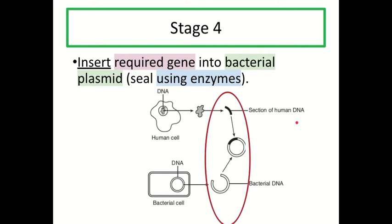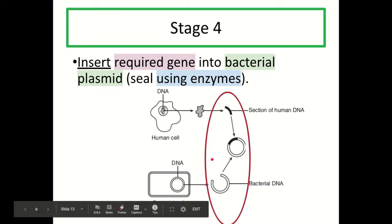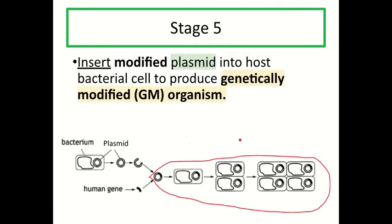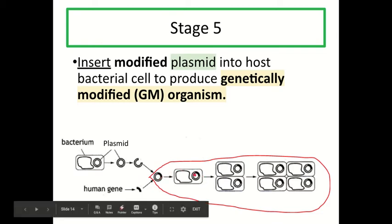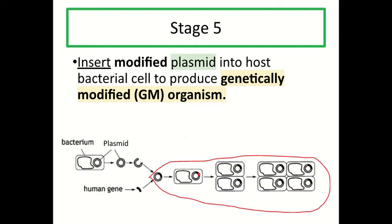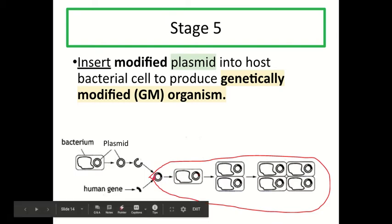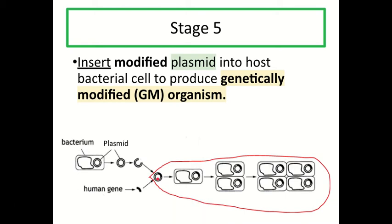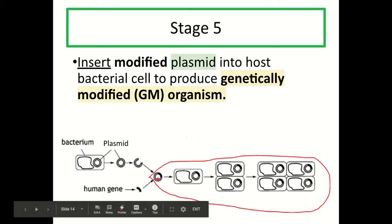So now we have the human gene taken from a chromosome in the human cell, and we have the cut-open bacterial plasmid taken from a bacterial cell. In stage four, we insert the required gene into the bacterial plasmid and then seal the plasmid — this also uses enzymes. This is now called a modified plasmid because we've modified it by adding the human gene. However, this modified plasmid cannot do anything on its own; we need ribosomes and other cell machinery to make protein, so the modified plasmid needs to be put into a cell.